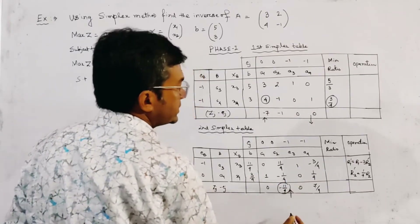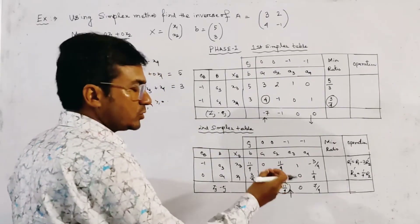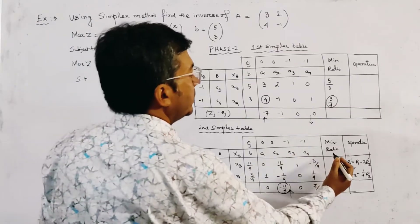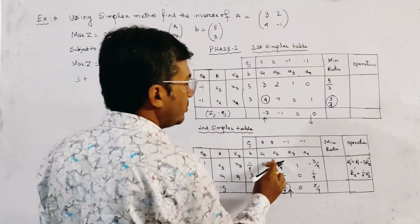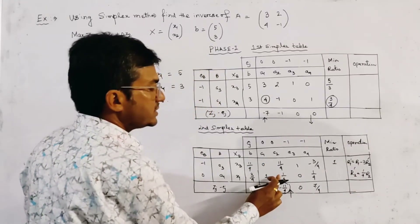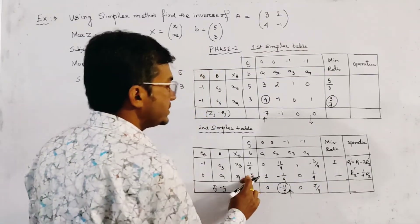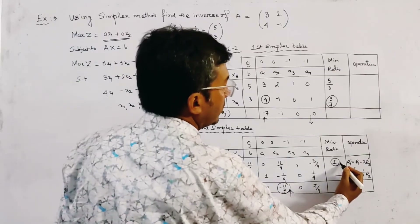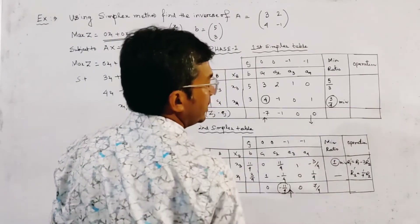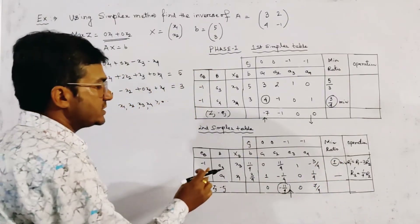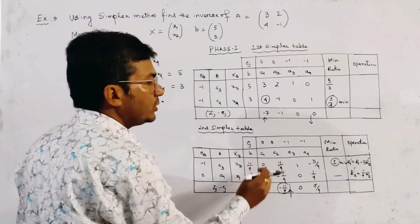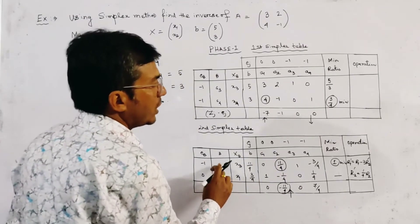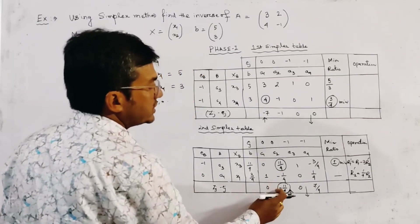To find the outgoing vector, we compute the minimum ratio. The ratio is (11/4) / (11/4) = 1. Since the other element is negative (-1/4), we cannot use it for the ratio. There is only one valid minimum ratio, so the key row is the first row — the row of A3. The key element is 11/4, and A3 is the outgoing vector while A2 is the incoming vector. We proceed to the third simplex table with basis vectors A1 and A2.